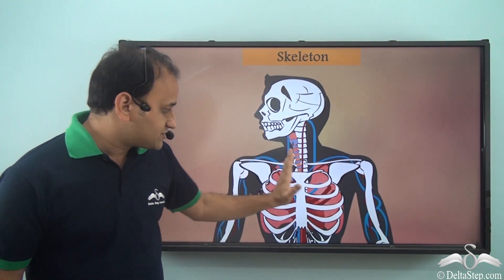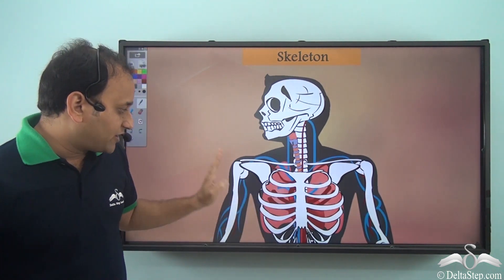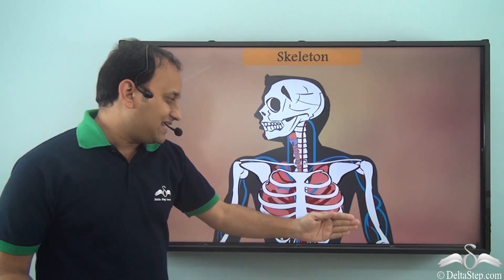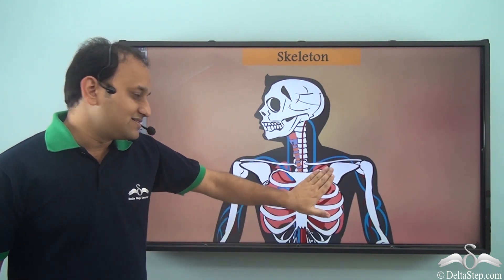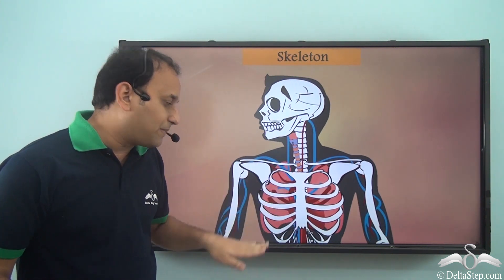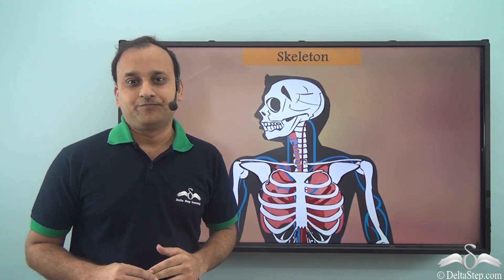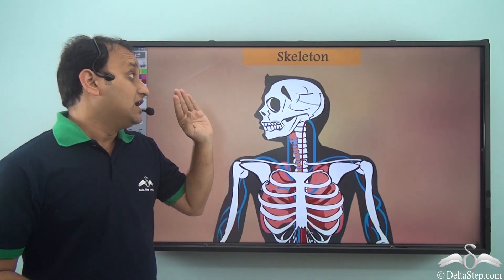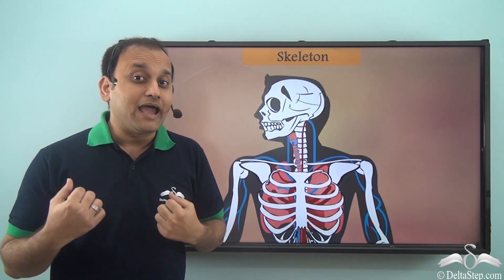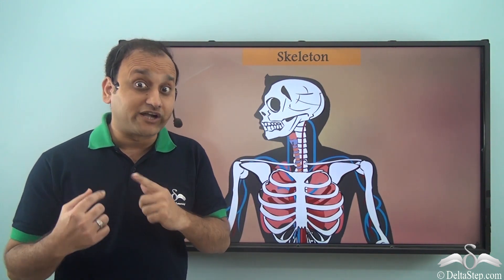So the skeletal system provides that protection to the body — it covers all the important organs. If you get hit, it is the bones that get hit while the softer inner parts remain safe. So you see, the skeleton has a very important function of protection.